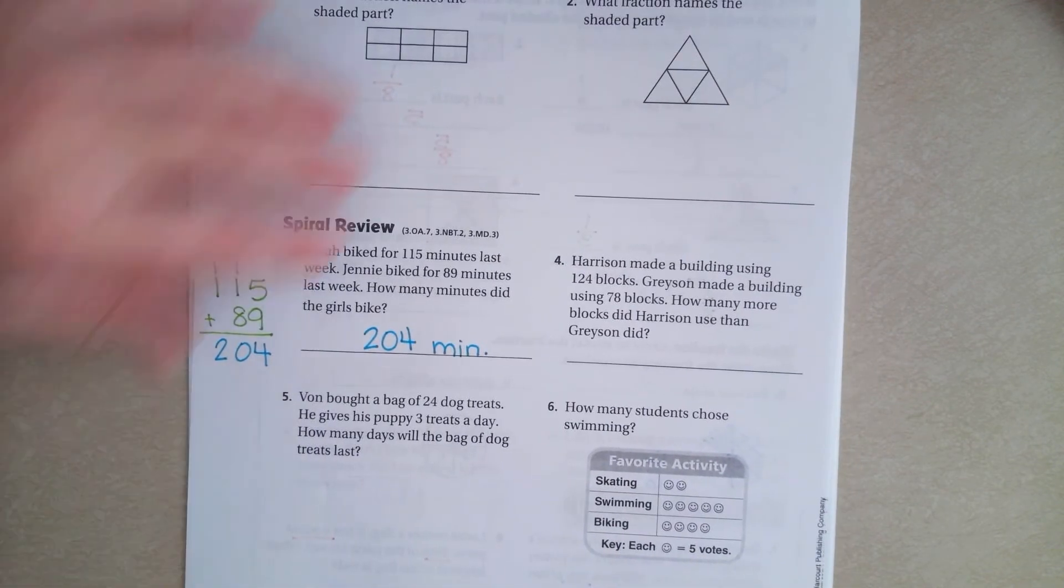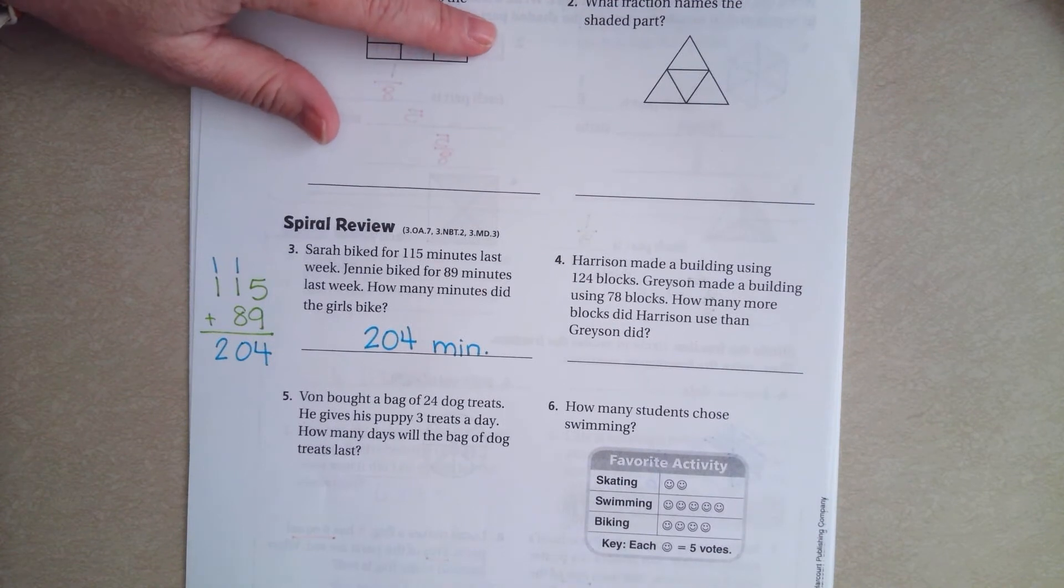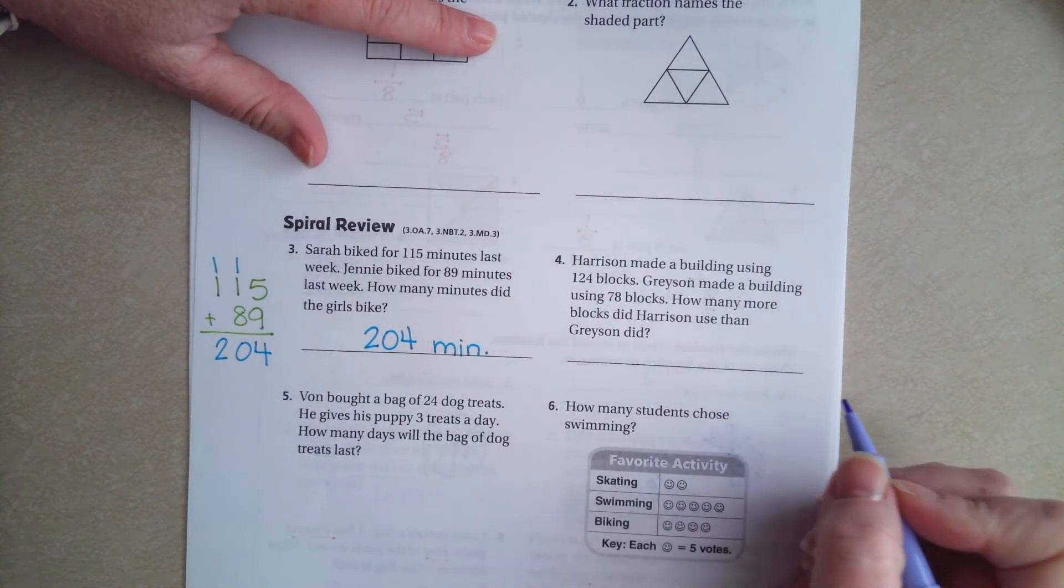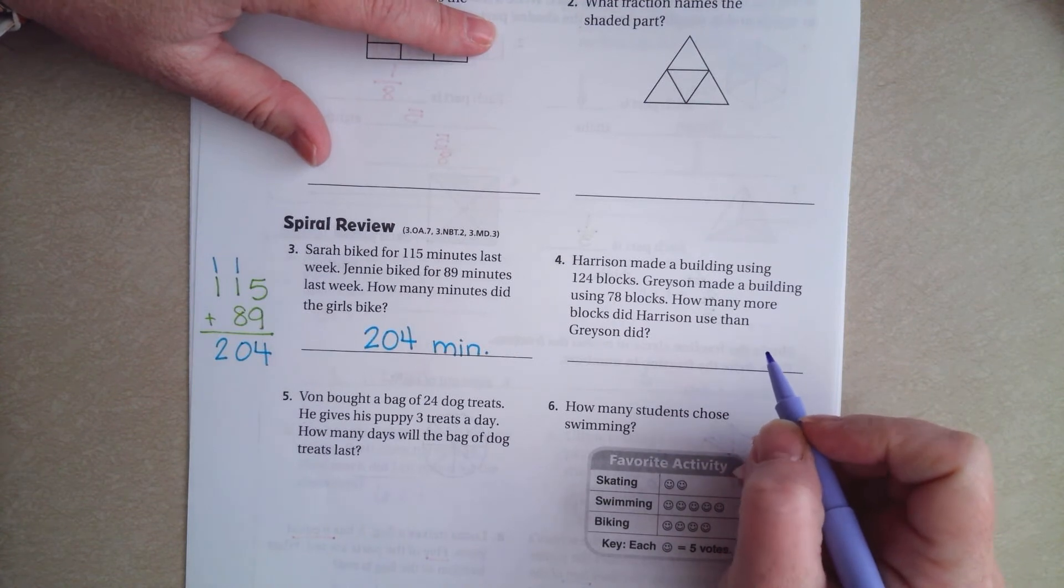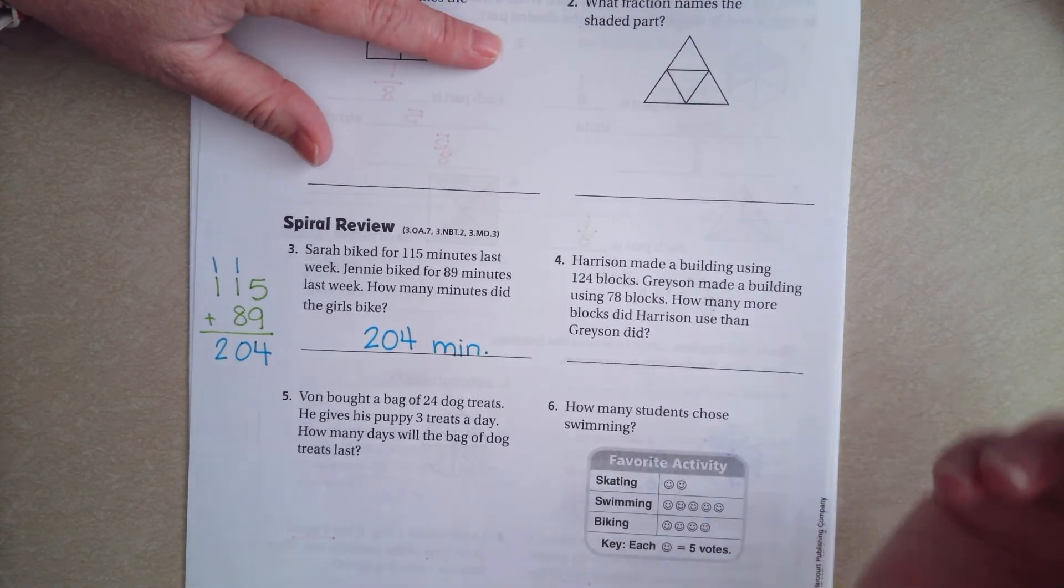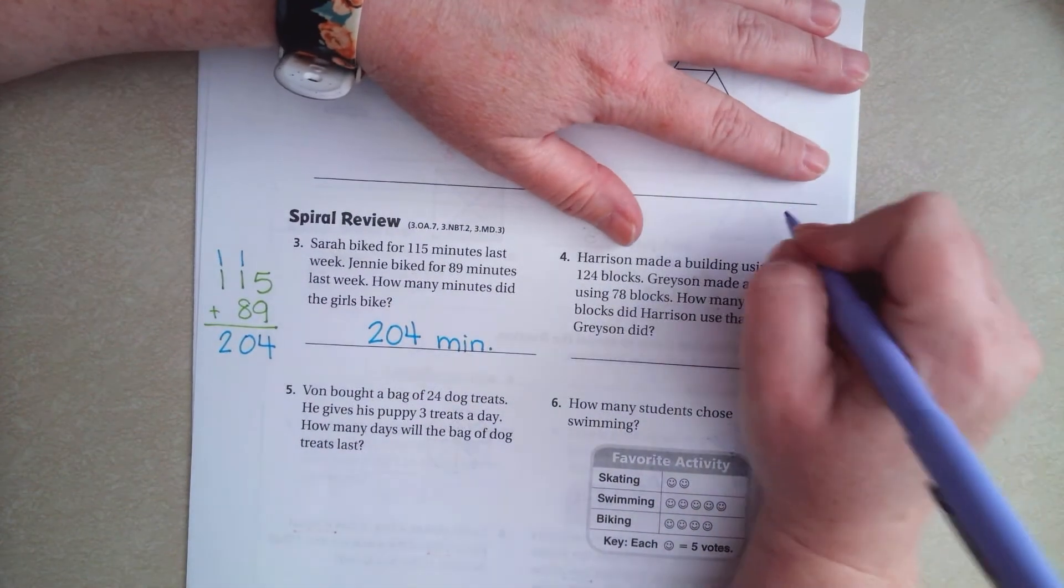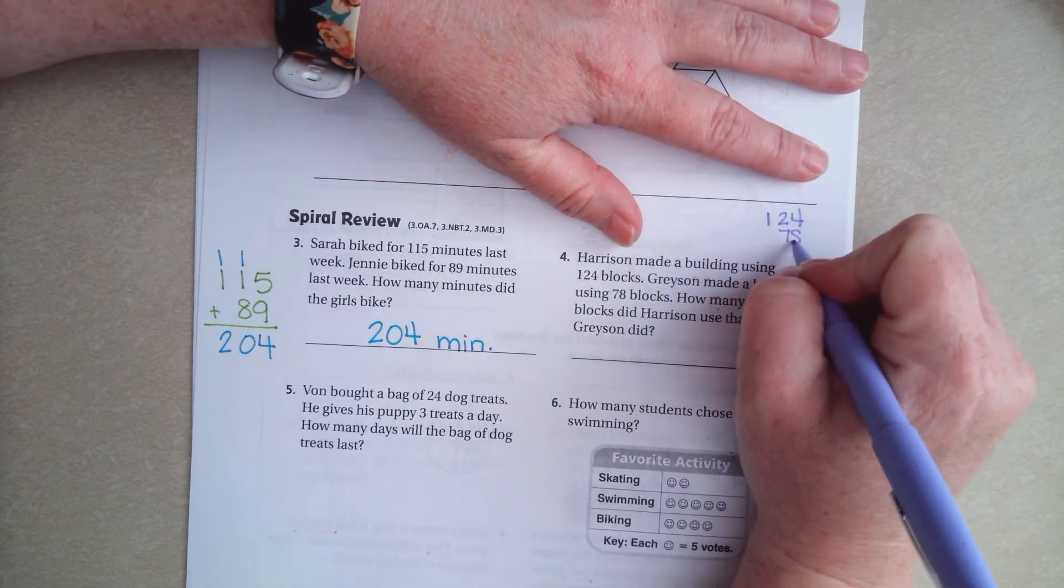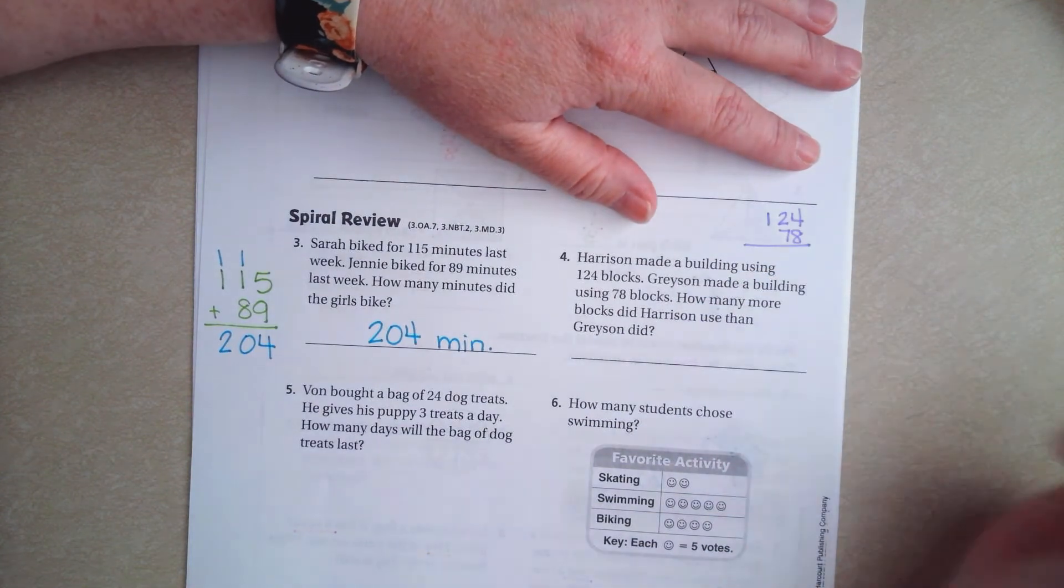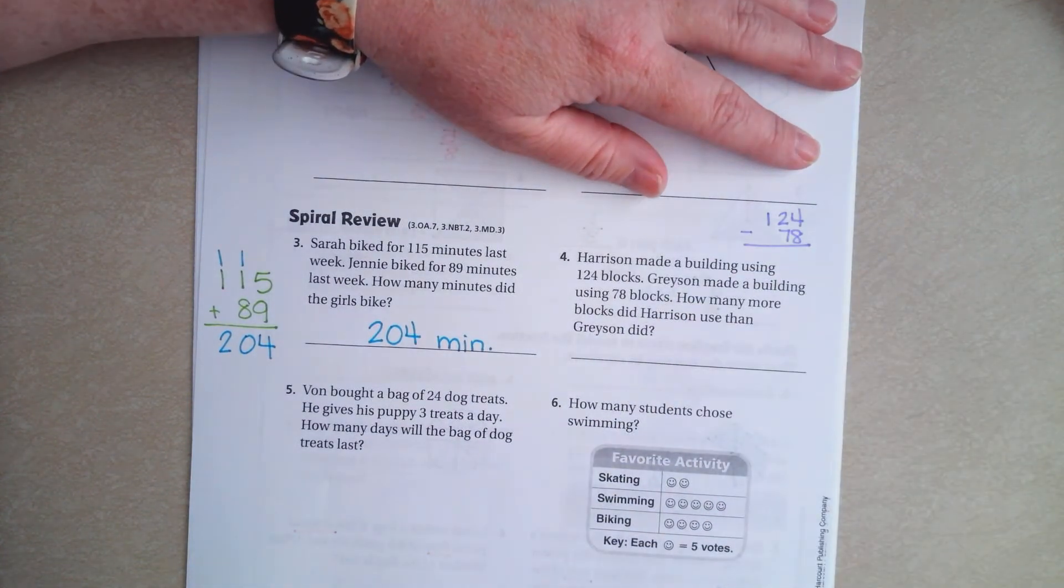All right. Harrison made a building using 124 blocks. Grayson made a building using 78 blocks. How many more blocks did Harrison use than Grayson? So, we're going to do 124. I'm just going to do it up here. And 78. And because we're trying to find the difference, we're going to subtract.